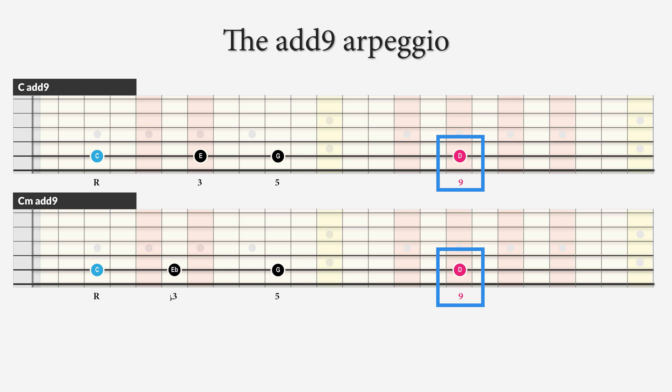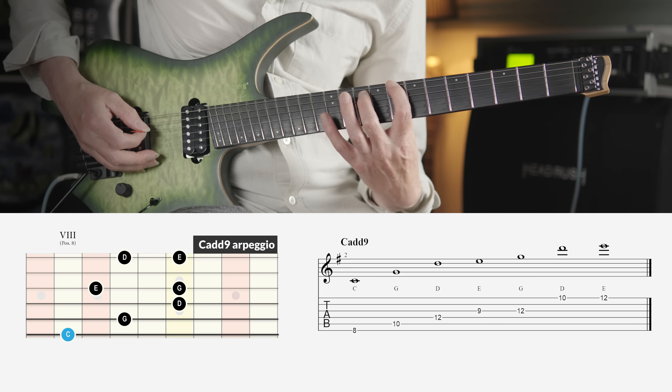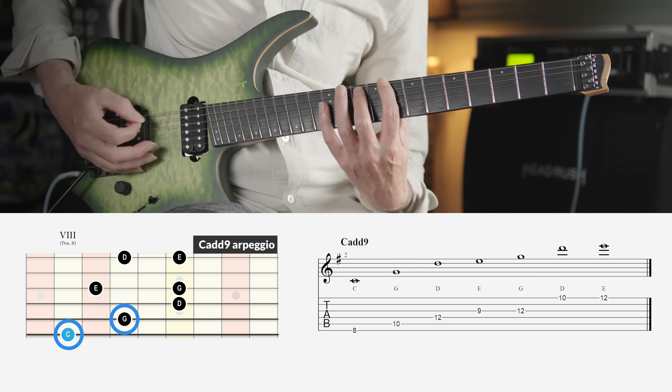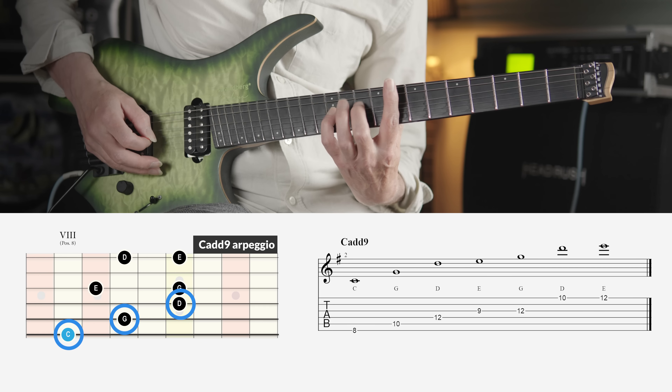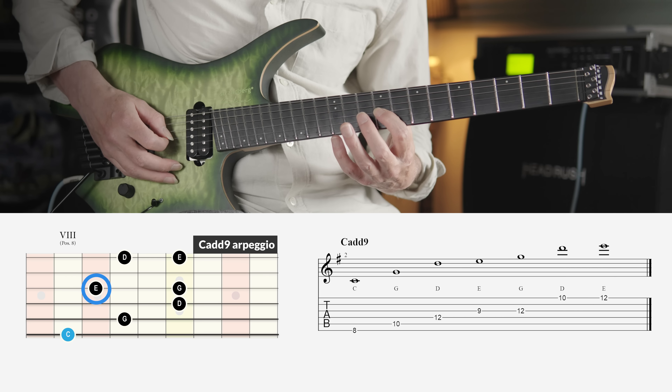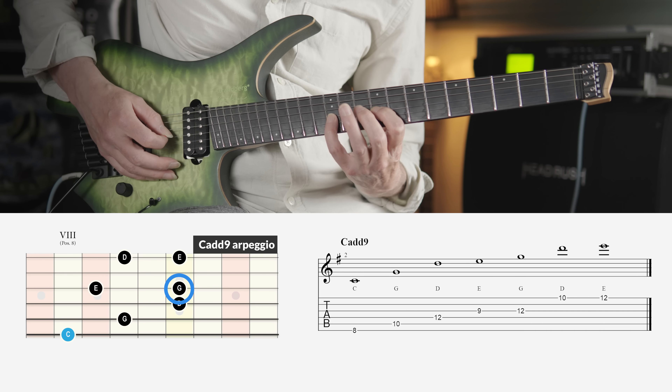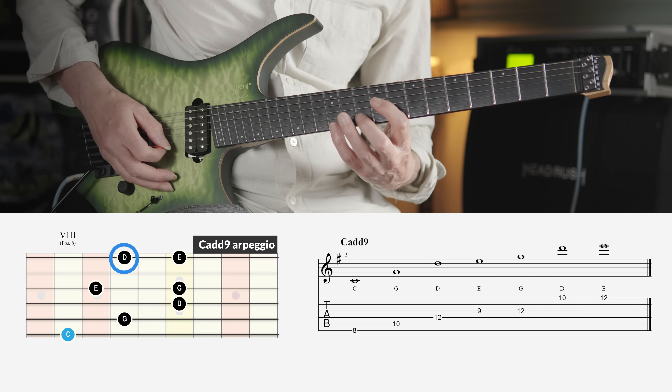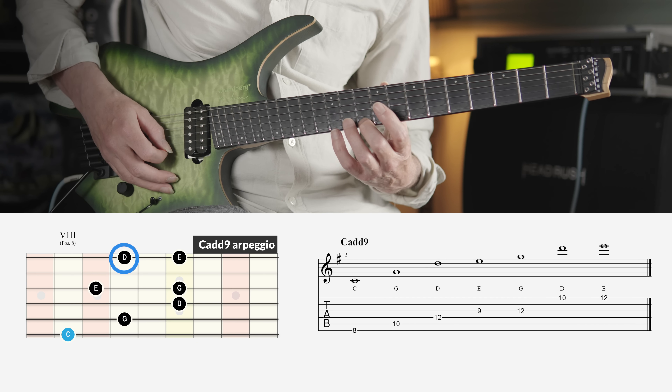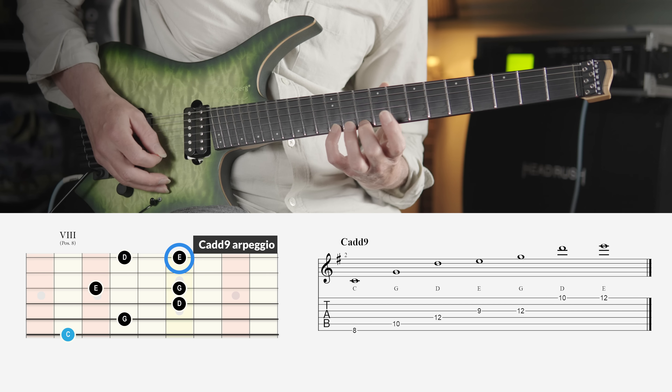A similar idea to the major 6-9 arpeggio can be applied to the added 9th arpeggio — a major or minor triad with an addition of the 9th. Again we start off by stacking two 5th intervals: the root C, the 5th G, and the 9th D. After this we play the major 3rd E and the 5th G on the 3rd string, then skip the 2nd string and move on to the 9th D and the major 3rd E on the 1st string. The result is a beautiful melodic open sound, using a combination of alternate picking and economy picking.